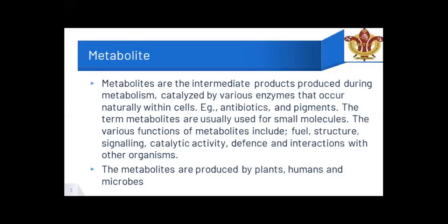Metabolites are the individual products produced during metabolism. There are a number of metabolites produced during metabolism in humans as well — for example, hormones which are synthesized, like estrogen, cholesterol, and various other substances synthesized in the body. Similarly, substances are synthesized in the plant and animal kingdom. They perform various metabolic functions like fueling — you need energy, growth and development, and defense mechanisms.